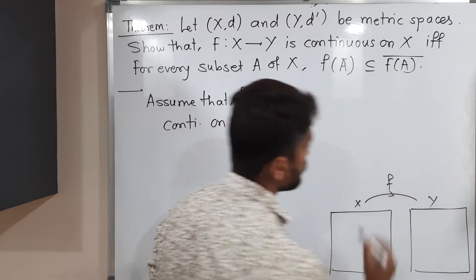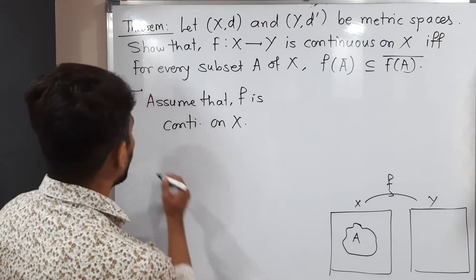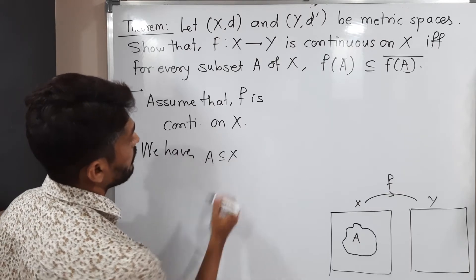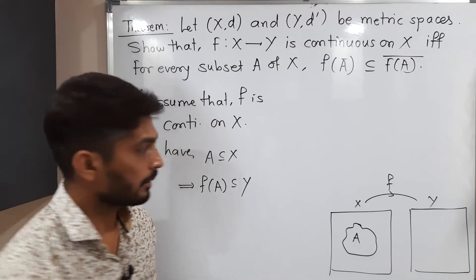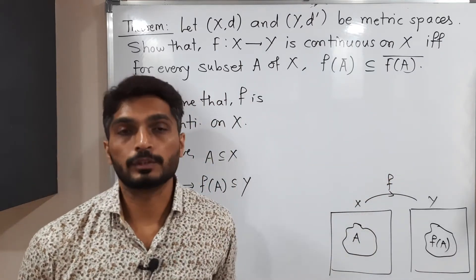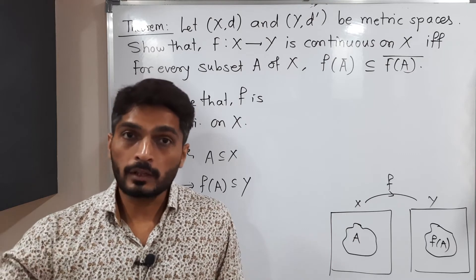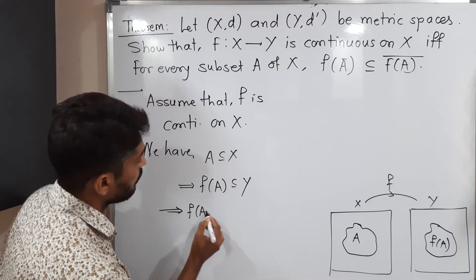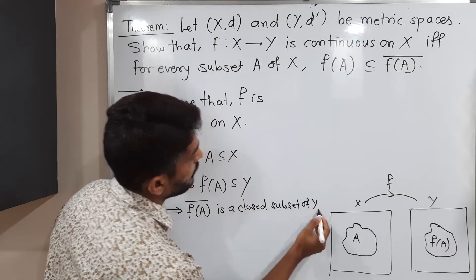We have a function f from X to Y. Here, A is a subset of X. If we take the image of A, it will be a subset of Y — so f(A) will be in Y. If we take its closure, recall that closure of A means A together with all its limit points. We can say f(A̅) is a closed subset of Y.